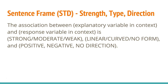When you're doing this in context, you're going to write: 'The association between [blank] and [blank],' where the blanks are your explanatory variable and your response variable — these are interchangeable. This association is going to include the strength, which is either strong, moderate, or weak. Try not to use things like 'moderately strong' or 'moderately weak' — just stick to the three words.